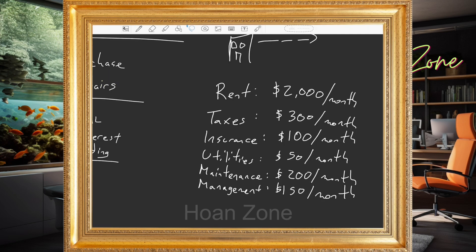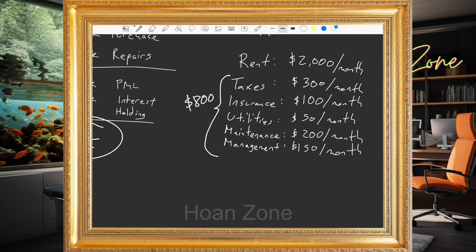Let's look at all the expenses. We have $300 for taxes, insurance, utilities, maintenance, and management. When you add those up: $300, $400, $450, $550, $650, $700, $800 — so we have $800 per month in expenses. Subtract that from the $2,000 rent and what we have left is $1,200 a month. That sounds pretty good — but there's one big thing we're leaving out.